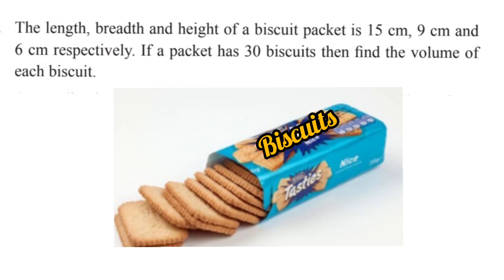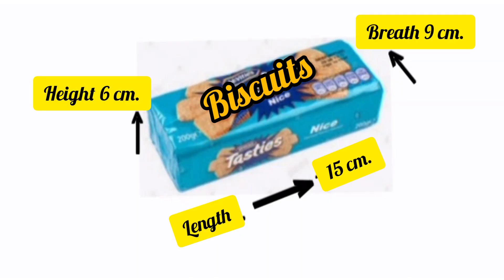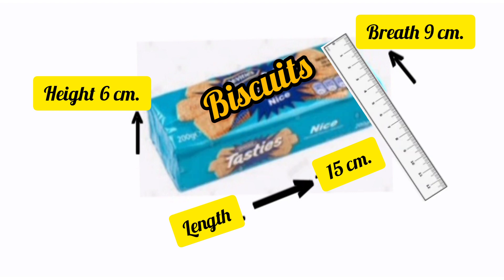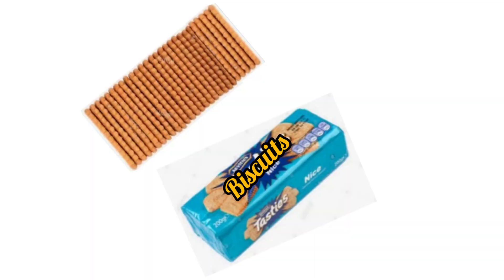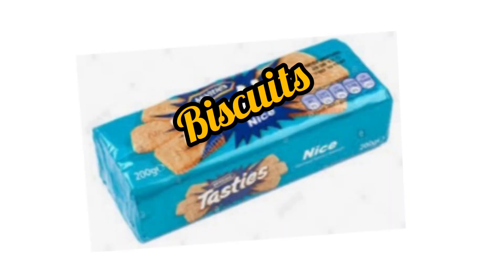Our next question: the length, breadth and height of a biscuit packet is 15 cm, 9 cm and 6 cm respectively. If a packet has 30 biscuits, find the volume of each biscuit. To find the volume of one biscuit, we will first find the volume of the biscuit packet. By multiplying length into breadth into height, we get 810 cm³. This is the volume of 30 biscuits. To find the volume of one biscuit, we divide 810 by 30 — we get 27 cm³.